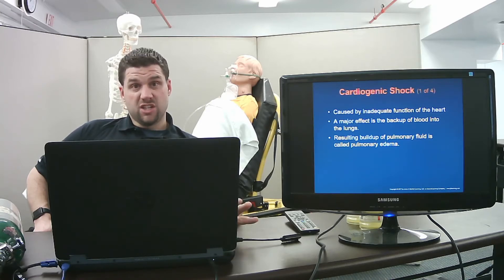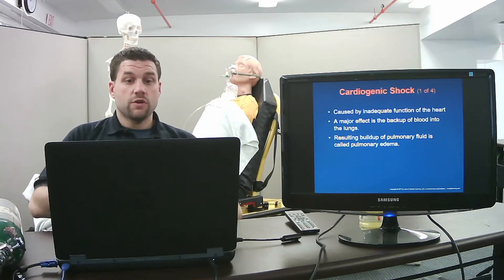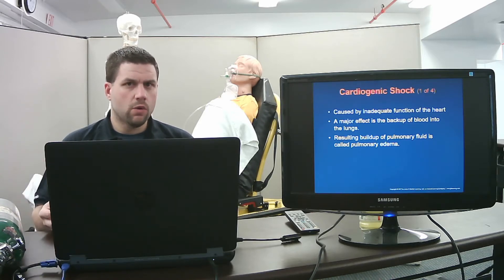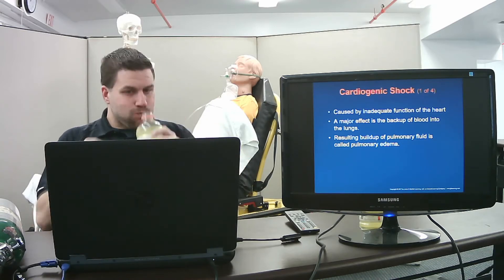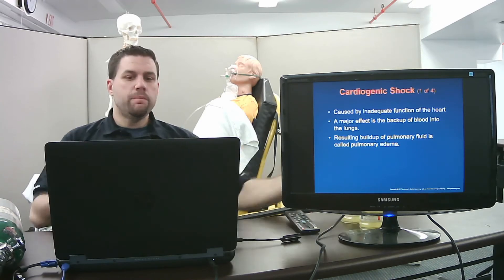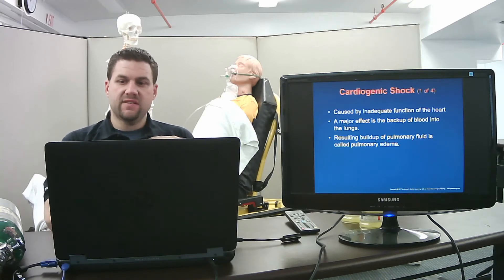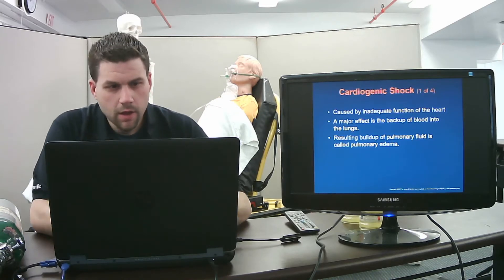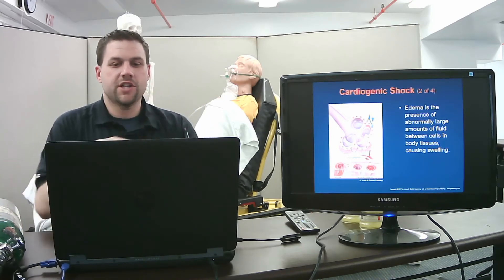Cardiogenic shock is caused by inadequate function of the heart — the heart is starting to fail. A major effect is backup of blood into the lungs, which you've heard before as congestive heart failure. When fluid backs up into the pulmonary system we call it pulmonary edema, which we may hear with a stethoscope as rales.